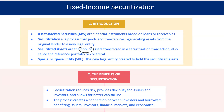Securitization starts by grouping a pool of assets — think car loans, mortgages, or other receivables — and transferring them from the original lender to a special-purpose entity, SPE. The SPE takes ownership of these assets and issues securities backed by them. This way, the cash flows from the original borrowers are redirected to investors who hold the ABS. Securitization transfers the risk associated with these loans away from the lender, giving investors direct exposure to the cash flow from the loan pool.